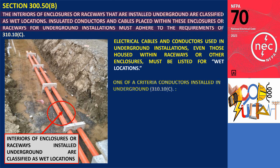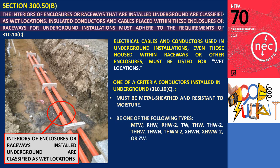Since the interior of every underground raceway and enclosure is considered a wet location, all conductors must meet the following criteria outlined in section 310.10(C). 1. Moisture impervious: conductors must be metal-sheathed and resistant to moisture. 2. Approved types: conductors must be one of the following types: MTW, RHW, RHW2, TW, THW, THW2, THHW, THWN, THWN2, XHWN2, or ZW. 3. Wet location listing: conductors must be specifically listed for use in wet locations.